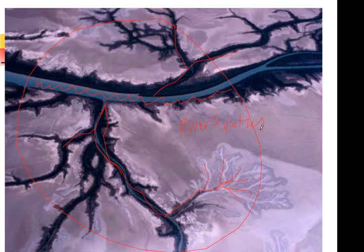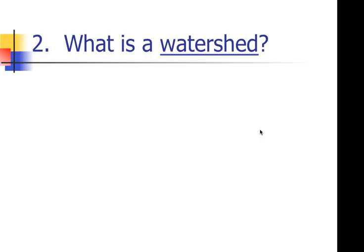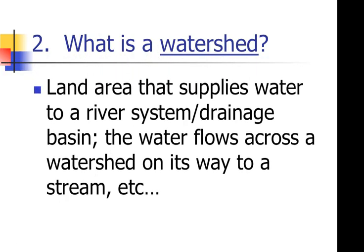Now we're going to move on to number two: watershed. When I see the words 'water' and 'shed,' I think of a shed as a building in my backyard where I might keep water. Using that memory trick, a watershed is a land area that supplies water to a river system — it's a place where a river gets its water.